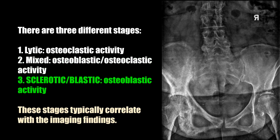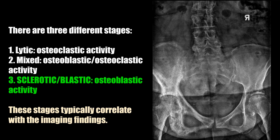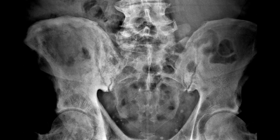The second stage is mixed, where you can have both osteoblastic and osteoclastic activity. The third stage is sclerotic or blastic, where you have all osteoblastic activity. This is the most common radiographic presentation of Paget's disease, and typically these stages will correlate with their imaging findings.